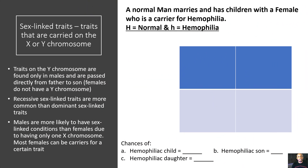Let's take a deep dive into sex-linked traits. These are traits carried on the X or Y chromosome. Traits on the Y chromosome are found only in males and are passed directly from father to son — females do not have a Y chromosome. A male has an X and a Y chromosome, so if the father has that trait, it's passed directly to his son since his son also has the Y chromosome. Recessive sex-linked traits are more common than dominant sex-linked traits, and males are more likely to have sex-linked conditions due to having only one X chromosome. Most females can be carriers — they have an additional X chromosome to mask or cover that trait.